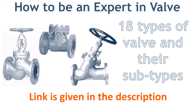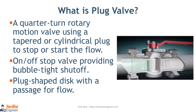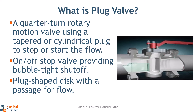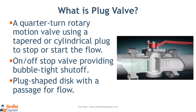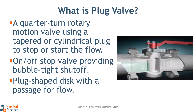Next, what is a plug valve? A plug valve is a quarter-turn rotary motion valve that uses a tapered or cylindrical plug to stop or start the flow. The disc is plug-shaped and has a passage to pass the flow. This bore passage is in line with the flow in the open position. When the plug is turned 90 degrees from the open position, the solid part of the plug blocks the flow.